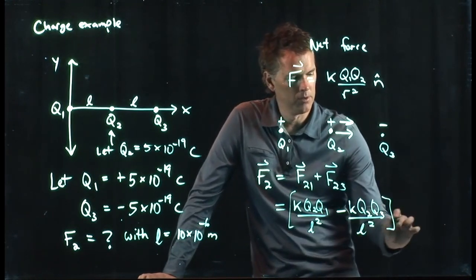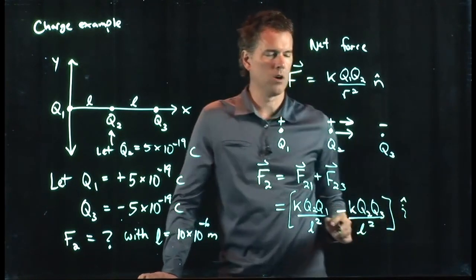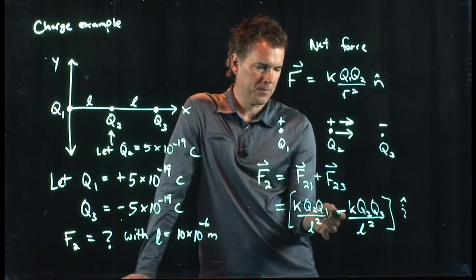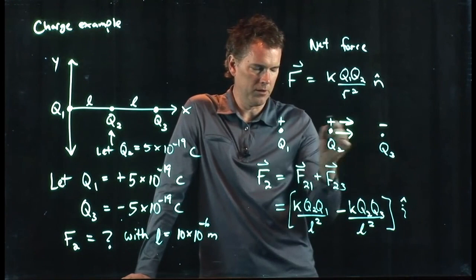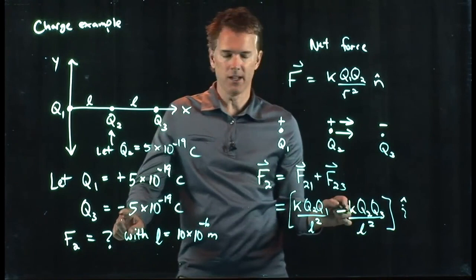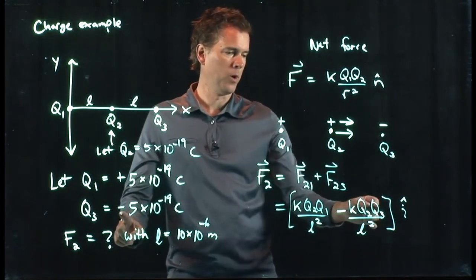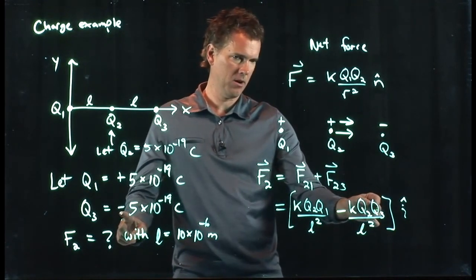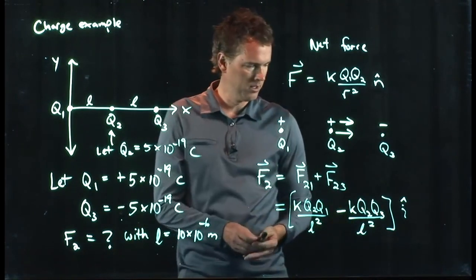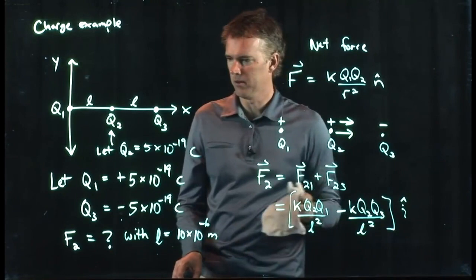And the direction on both of those is to the right, which we're calling i hat. Now, why did I put a minus sign here? We just said that both those forces are to the right. I put a minus sign there because q3 is negative, so when I plug in a negative number here, it's going to cancel with that negative and give me a positive.